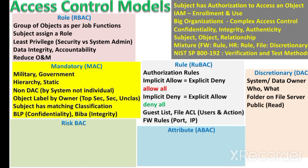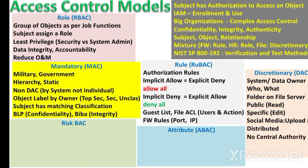For example, the public may be allowed read-only access while a specific user can edit the files in the folder. Social media platforms are also an example of DAC, where the owner of a picture uploaded to the platform can decide which users can access that particular picture. DAC is distributed and there is no central authority, which is the opposite of the mandatory access control model.